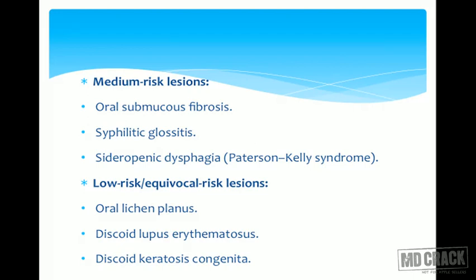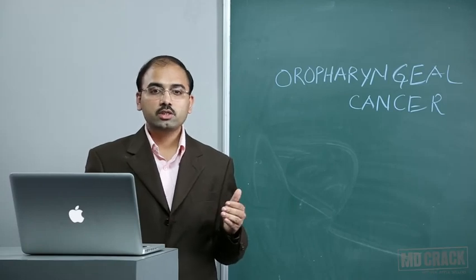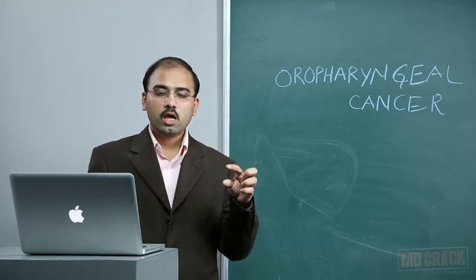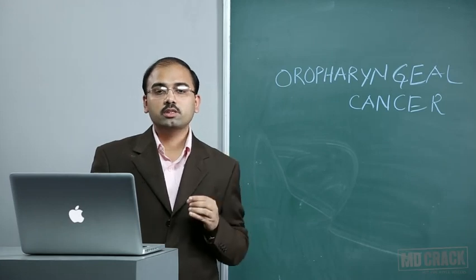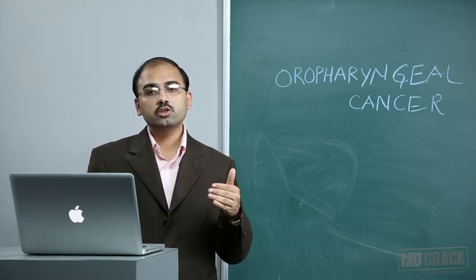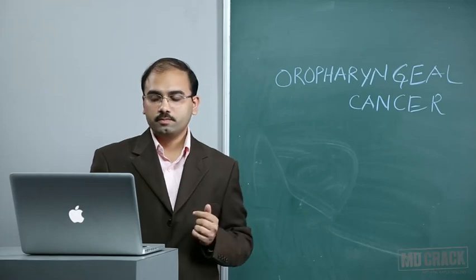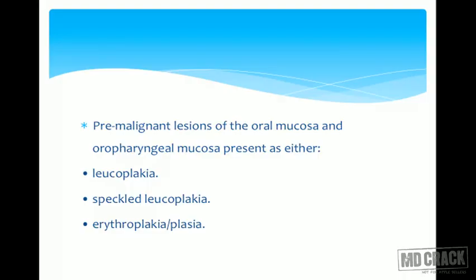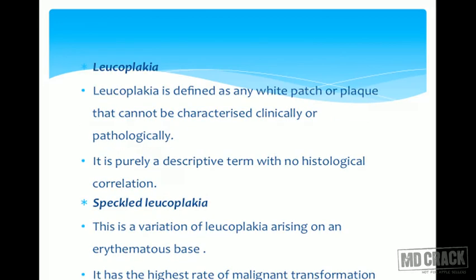Low-risk or equivocal-risk lesions include oral lichen planus, discoid lupus erythematosus, and dyskeratosis congenita. These three lesions have low or equivocal risk. Premalignant lesions of the oral mucosa and oropharyngeal mucosa present either as leukoplakia, speckled leukoplakia, erythroplakia, or erythroplasia.